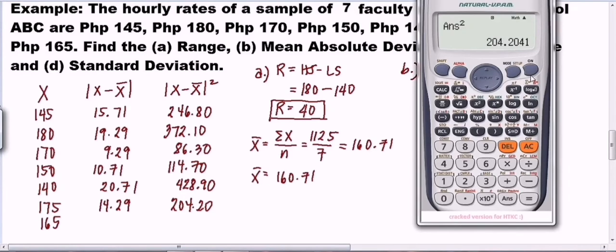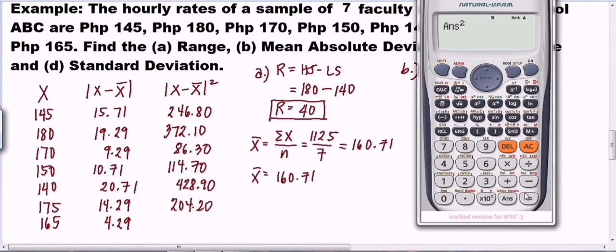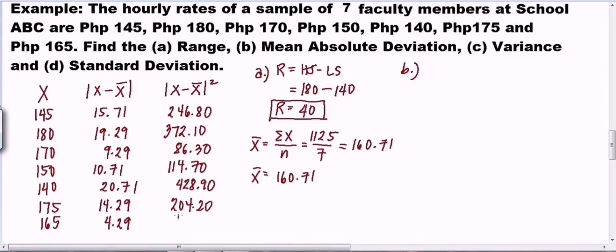The last X value is 165: 165 minus 160.71 equals 4.29, and the square of 4.29 is 18.40.